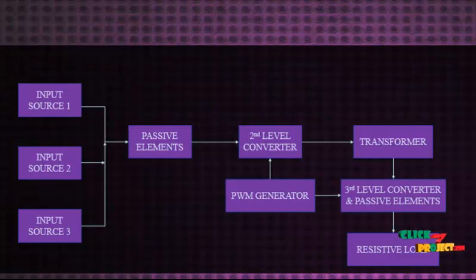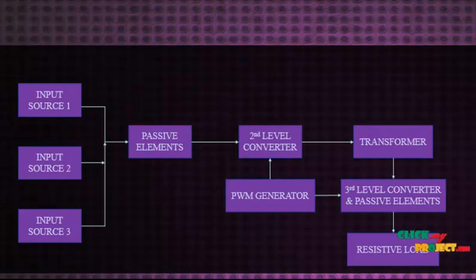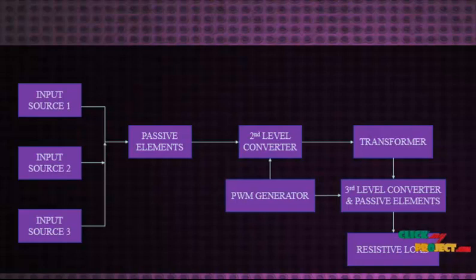Next we see about the flow diagram of our product. In this flow diagram, the first block is the input source. There are three input sources: solar generation, PV cell, fuel cell, and battery. These three sources are fed into the second level converter through passive elements.